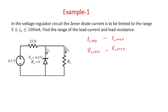First, let's understand the concept of the zener diode. The zener diode conducts in reverse bias, and the voltage across the diode should be greater than VZ to conduct. In the ON condition, the diode is replaced by a voltage source with a value of 4.8 volts. Since the zener diode is connected in parallel with the load resistance, the load voltage equals the zener voltage, which is 4.8 volts.